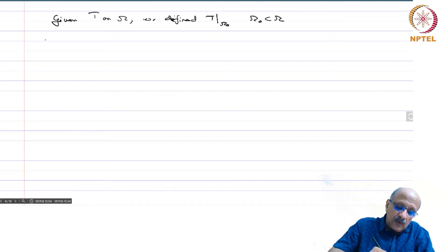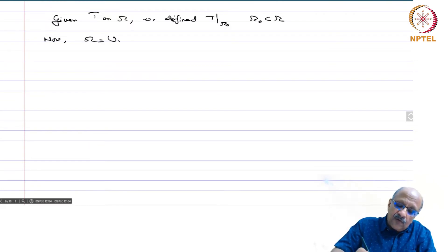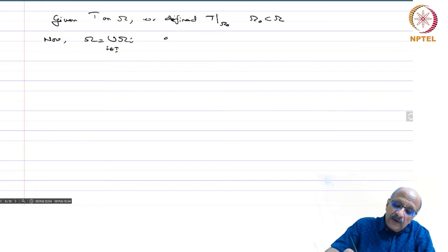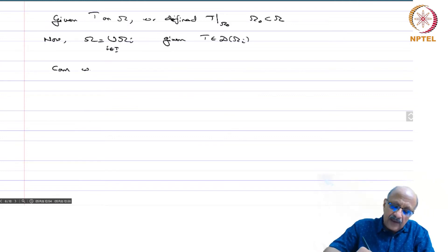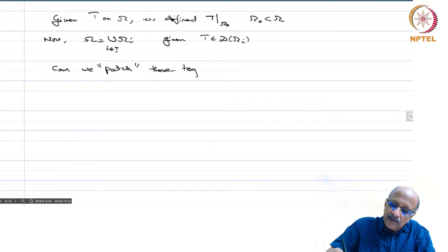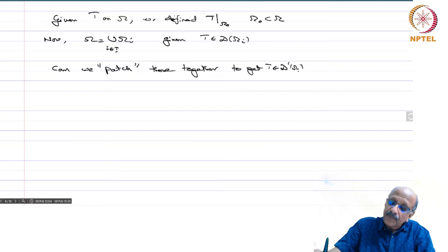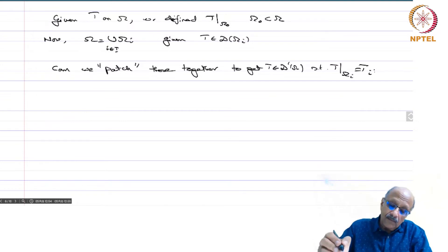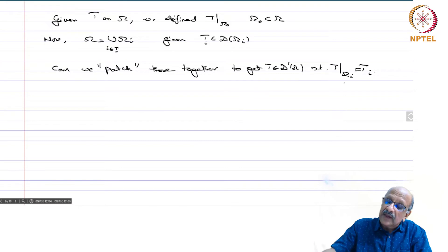Now we want to do the reverse process. If omega is the union of omega_i, i in I, and given t_i in D'(omega_i), can we patch these together to get t in D'(omega) such that t restricted to omega_i is t_i?